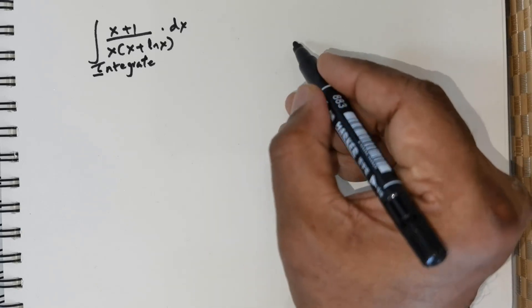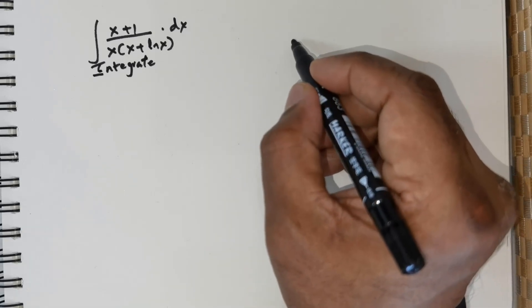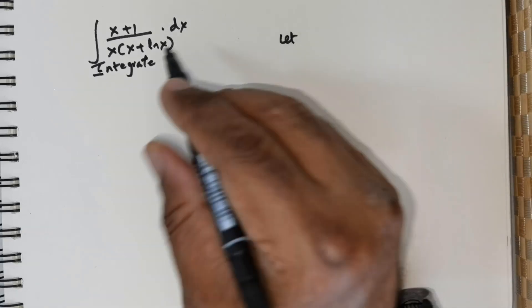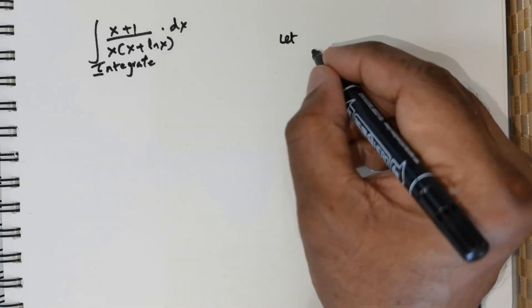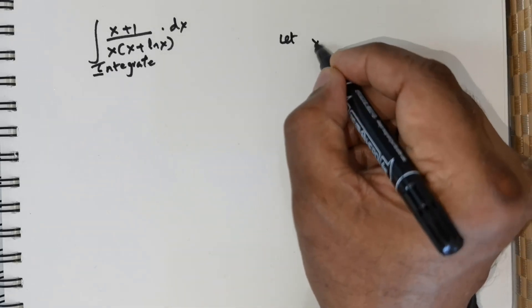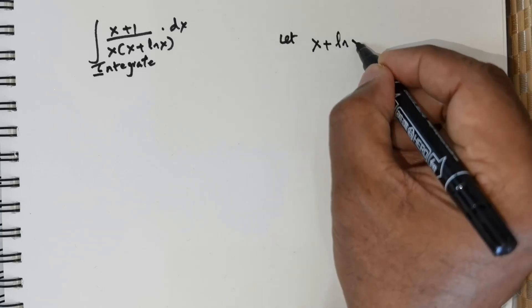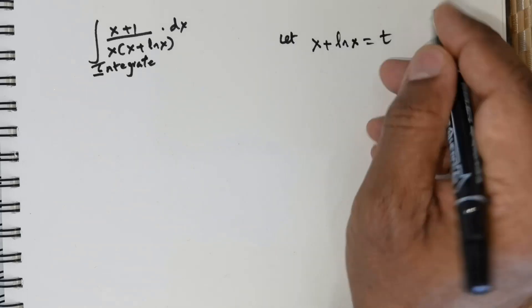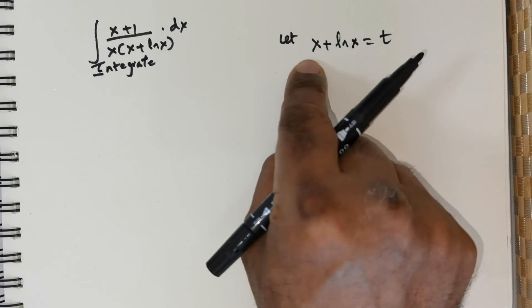For this we need to make the following substitution. If you miss the substitution, then it would turn out to be a very complex integral to integrate. So let me just take x + ln x to be equal to some t. This is the substitution that you will have to make.